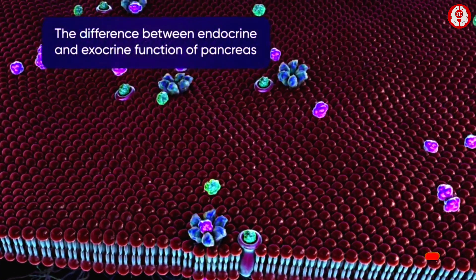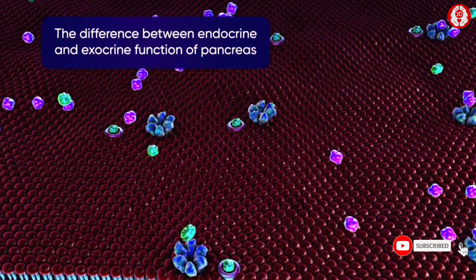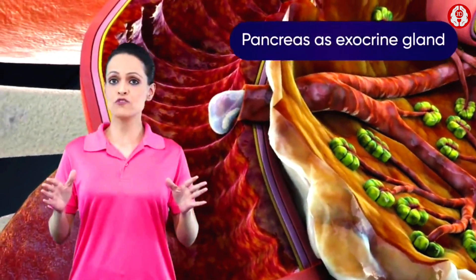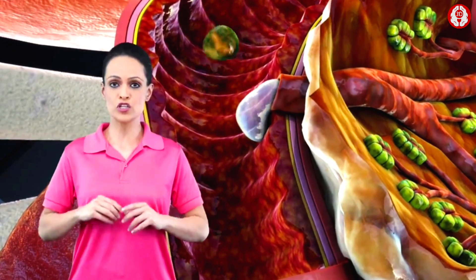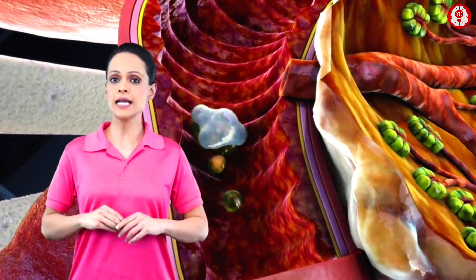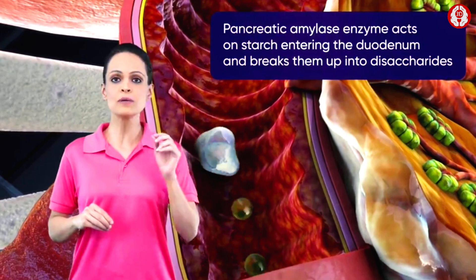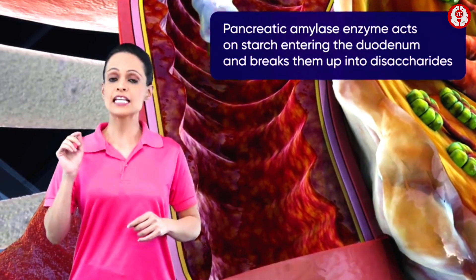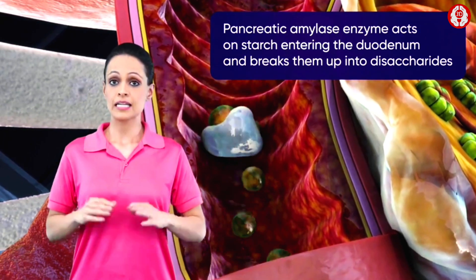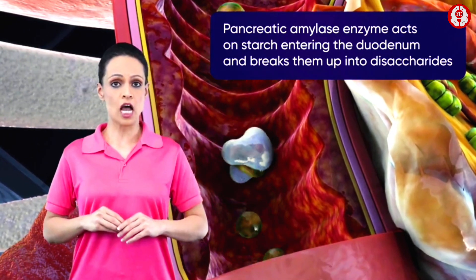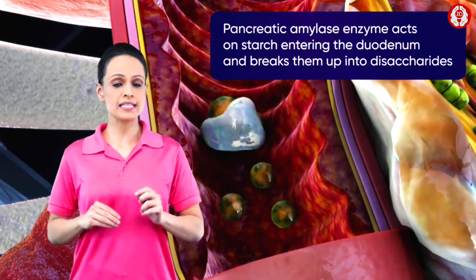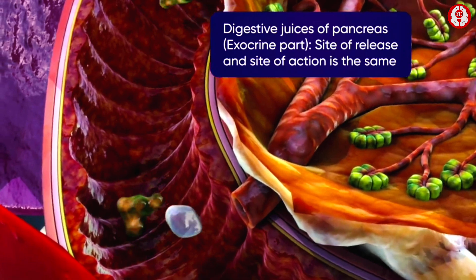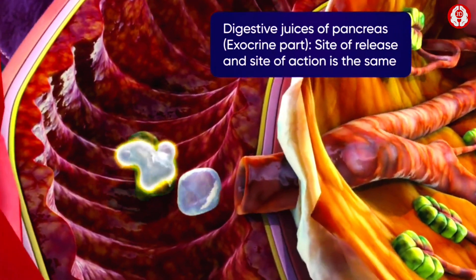The exocrine part of the pancreas releases juices rich in enzymes such as pancreatic amylase into the pancreatic duct. The site of action of this enzyme is close to the site of release. This enzyme acts on starch entering the duodenum and breaks it into disaccharides, directly acting on the substrate to form the required product.